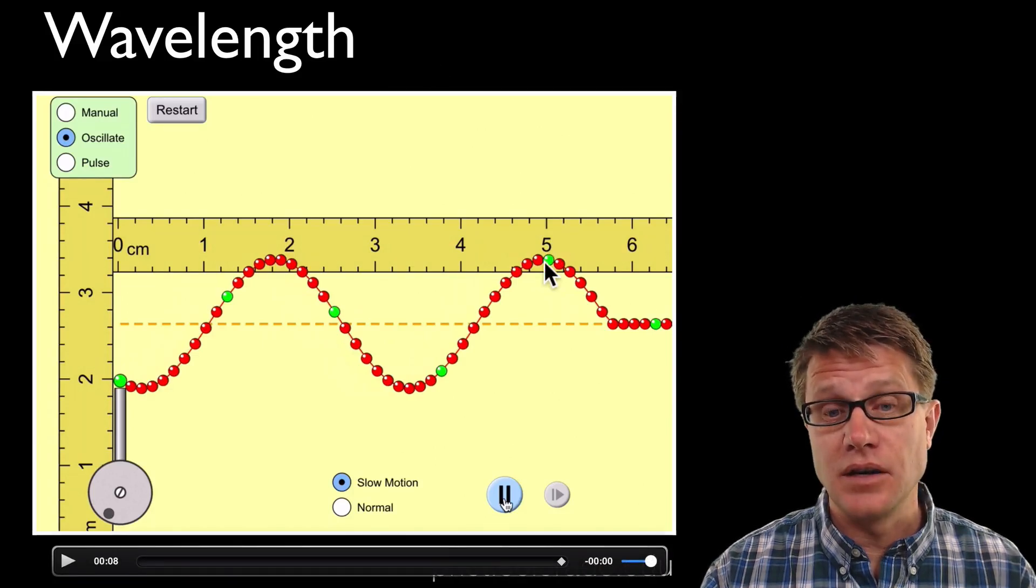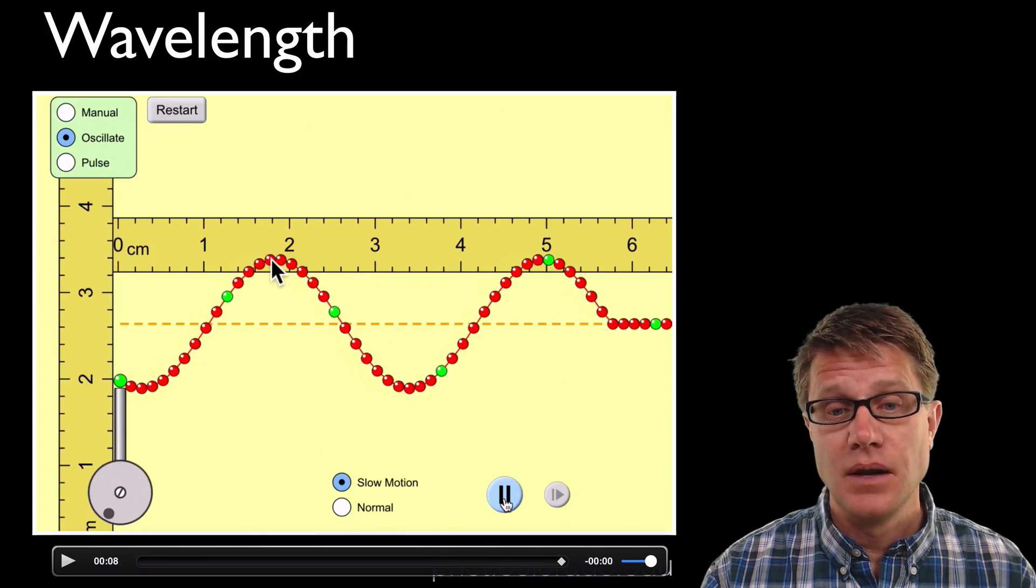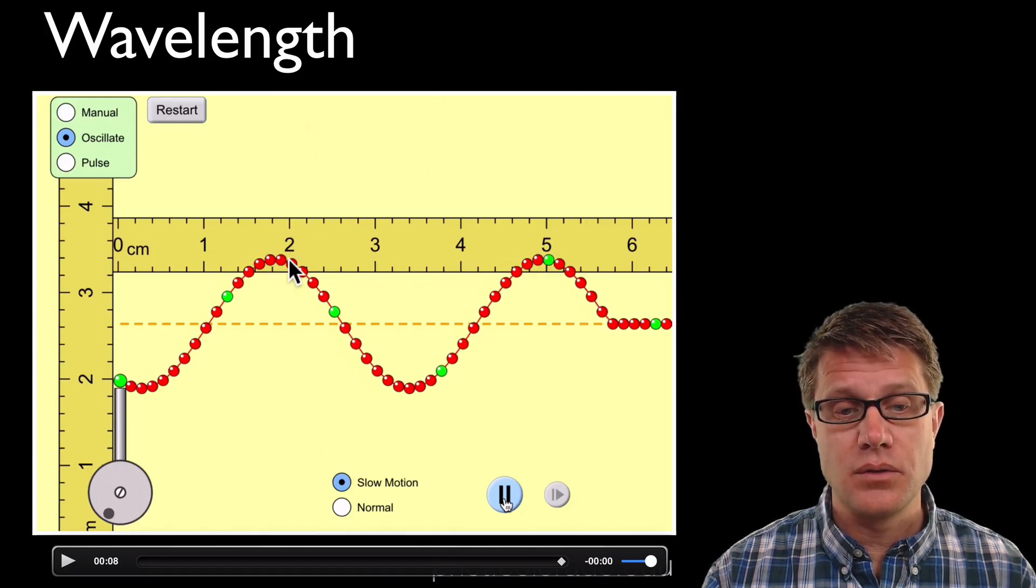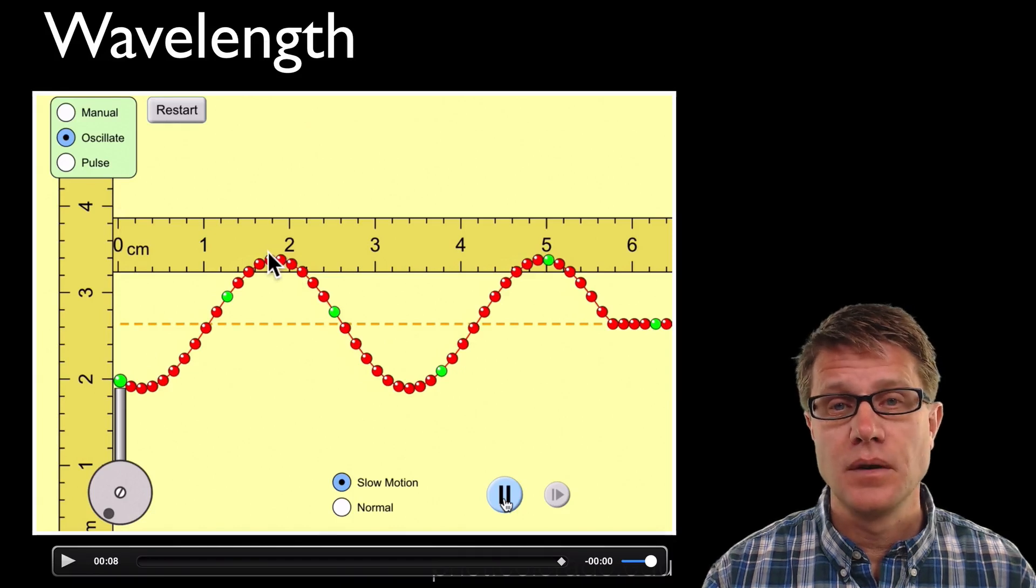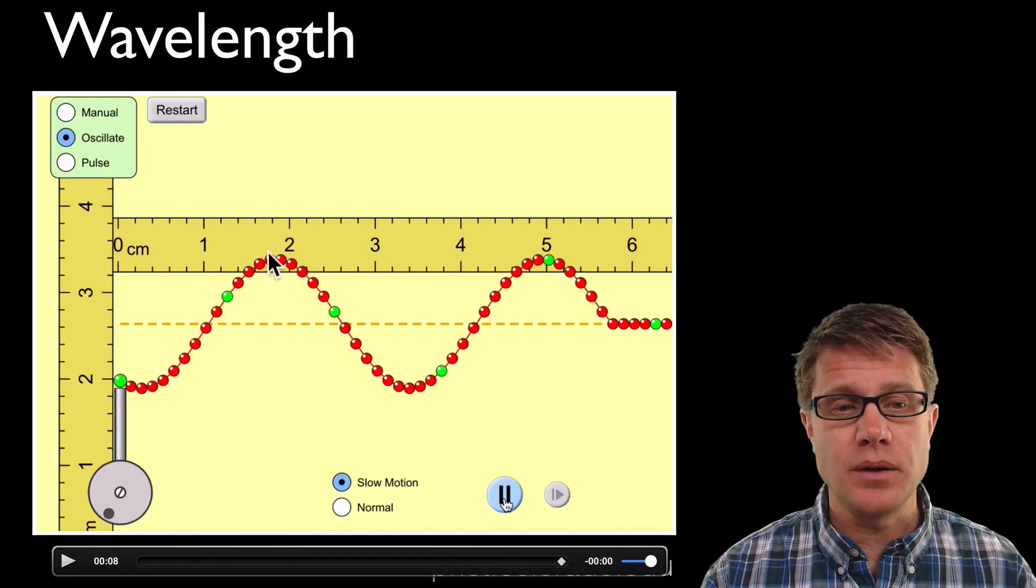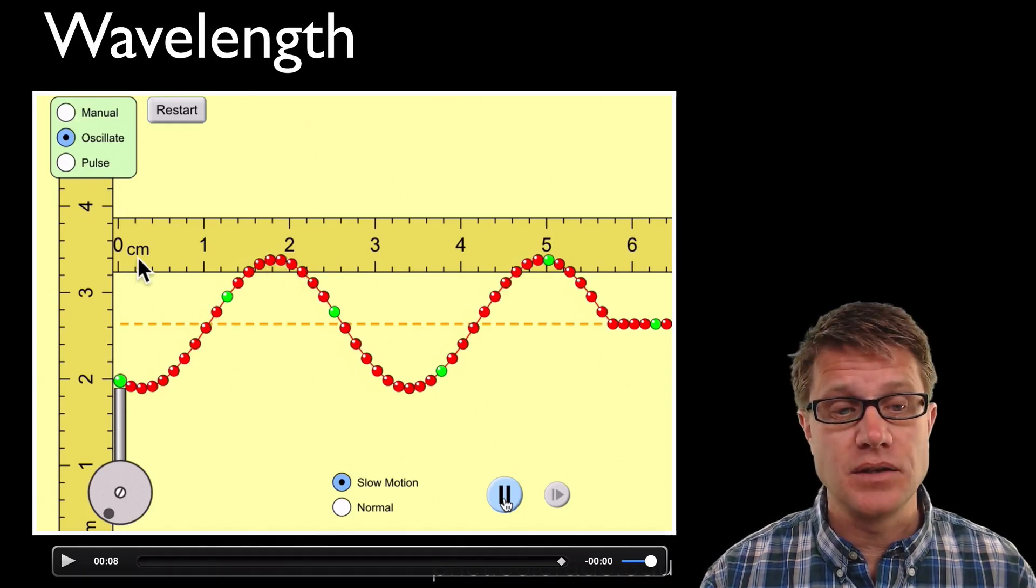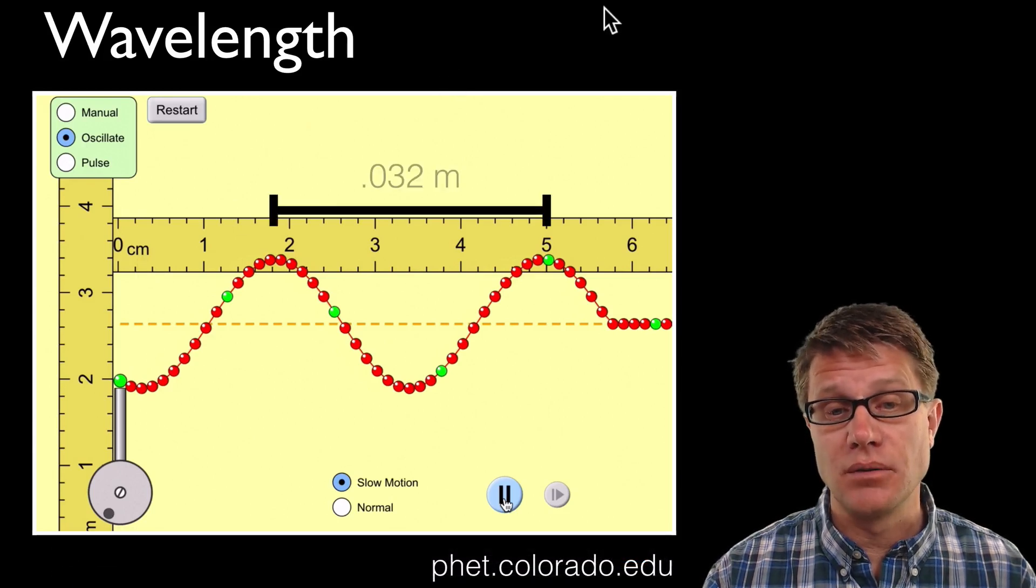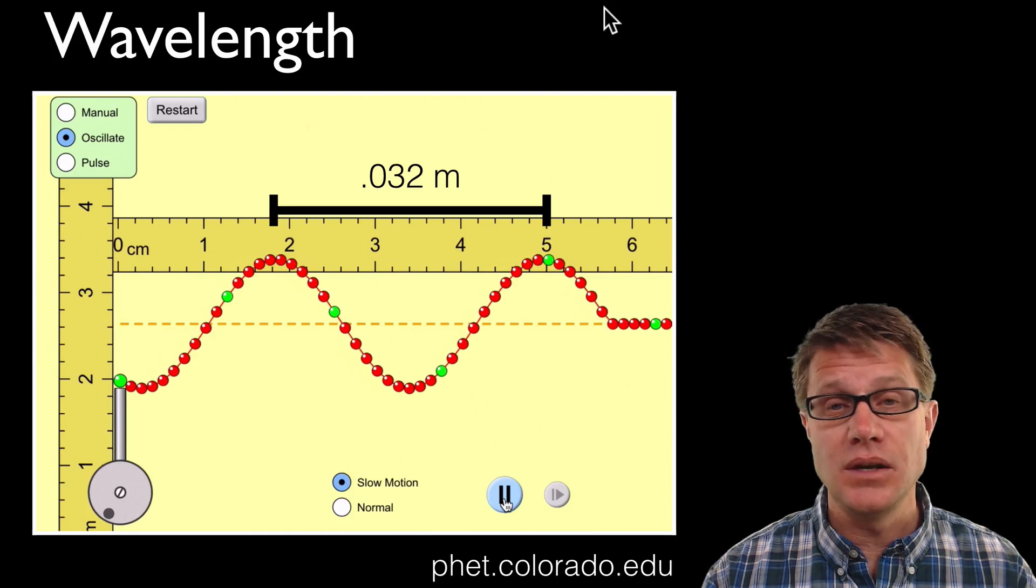I see one crest here and then another crest right down here. So the distance is going to be 1, 2, 3.2. But 3.2 what? I want to make sure that I have the units correct. This is going to be centimeters right here. So what I would write down is 0.032 meters.